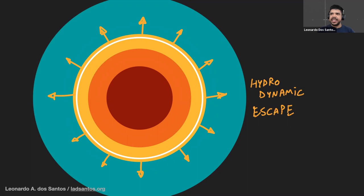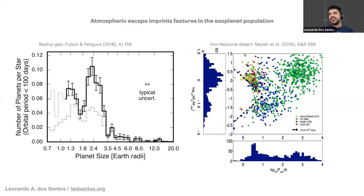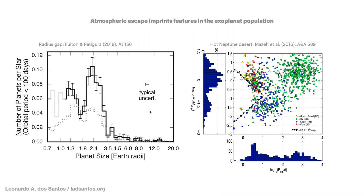We think hydrodynamic escape is so pervasive in short-period exoplanets because it imprints features in the population of exoplanets — specifically planets with radii around 1.8 Earth radii are rare, giving us this gap in their population. Another interesting feature is called the hot Neptune desert, which is a lack of Neptune-sized planets that are very highly irradiated. We think these two features are mainly carved by atmospheric escape.